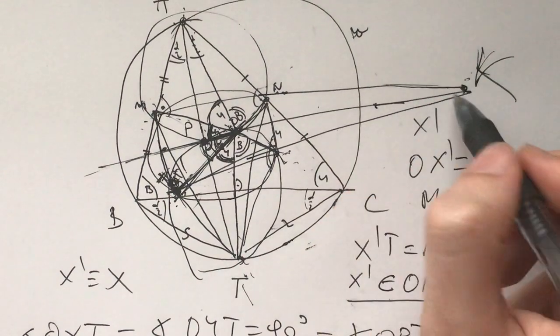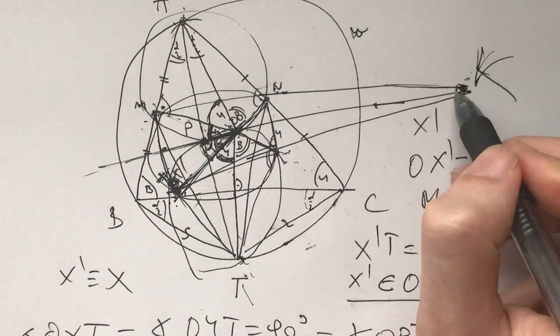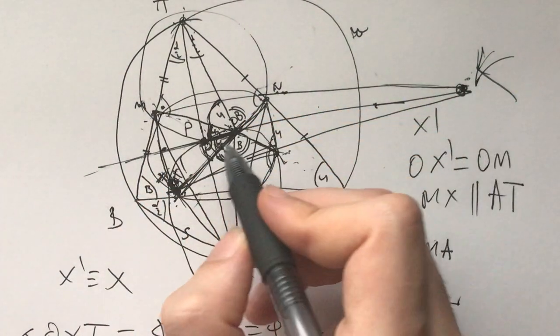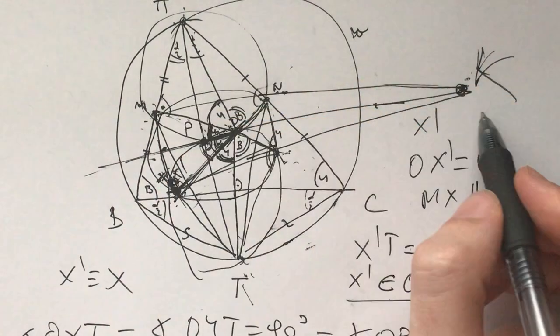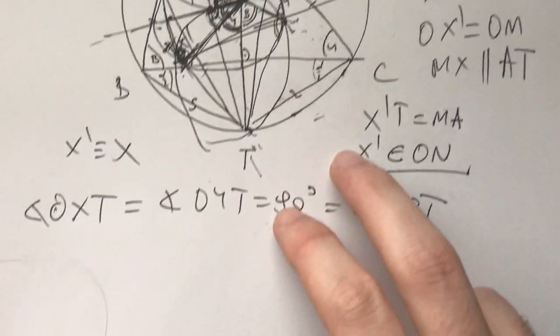And now, given that K is on the perpendicular bisector of AT, KOP are collinear. That means that KA is equal to KT. And that solves the problem.